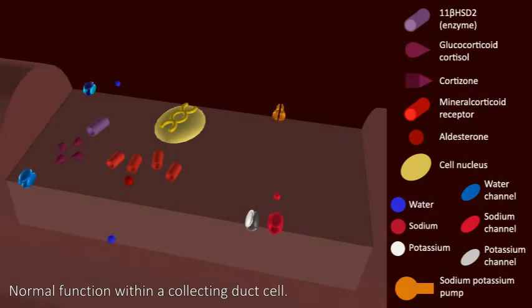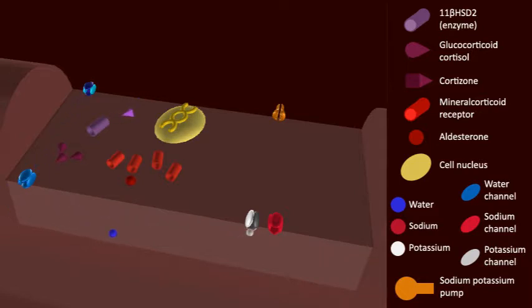Here we see a cross section of a normal functioning cell within the collecting duct. Aldosterone stimulation increases sodium reabsorption in the collecting duct through its action at the mineralocorticoid receptor, shown in red. When aldosterone, shown in red, binds to the mineralocorticoid receptor, it initiates processes which cause the increased expression of proteins involved in sodium reabsorption.